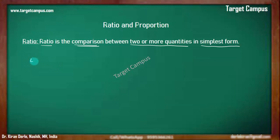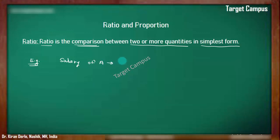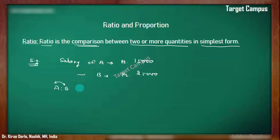Let's take an example. Suppose salary of A is Rs. 15,000 and that of B is Rs. 25,000. If you're asked to calculate the ratio of A to B — what is the comparison between the salary of A and the salary of B — then A to B is nothing but A upon B, and the simplified form of A upon B gives us the ratio.